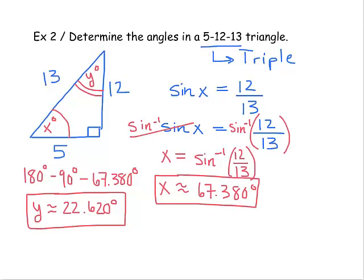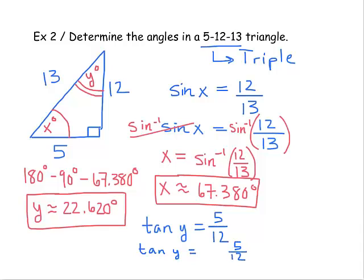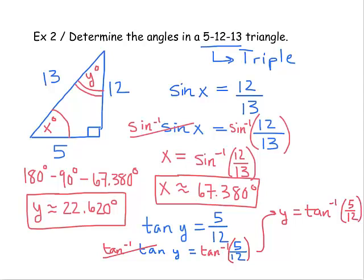Alternatively, we could continue using trigonometry to find y. Using the tangent ratio, the tangent of y equals the leg opposite to that y-degree angle, which is 5, over the leg adjacent to it, which is 12. So the tangent of y equals 5 over 12. Applying inverse tangent to both sides — inverse tangent and tangent undo each other — we take the inverse tangent of 5 over 12, and we find that y is approximately 22.620 degrees, confirming our earlier result.